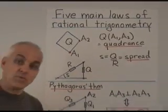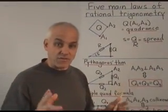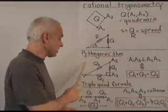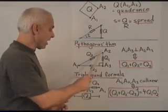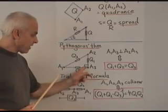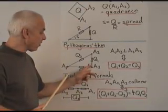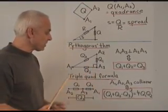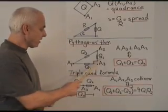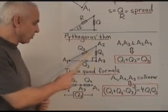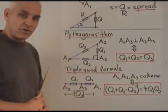Now, in previous videos, we've established the two main laws of the subject already. They are Pythagoras' theorem. You have a triangle like this, then that's a right angle, or these lines are perpendicular, precisely when this quadrant q1 plus that quadrant q2 equals the hypotenuse quadrants q3.